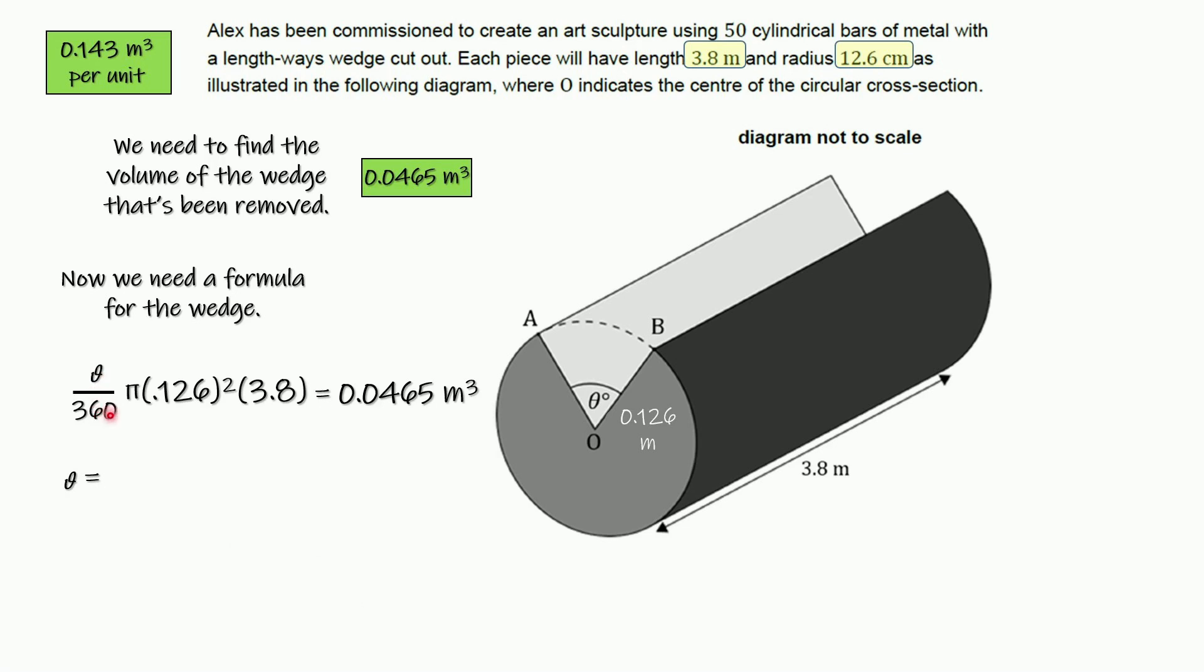All right, so we've got theta over 360. Let's go ahead and solve for theta, divide both sides by all of this, and multiply by 360, and here's what we got.